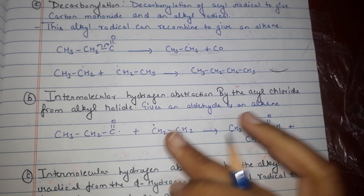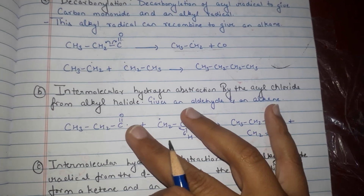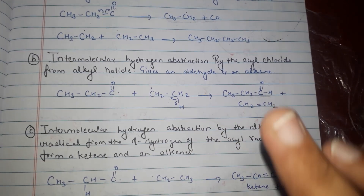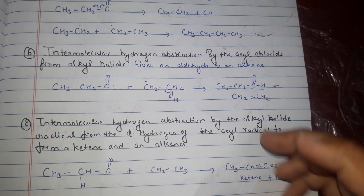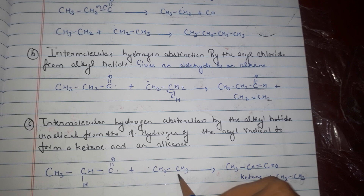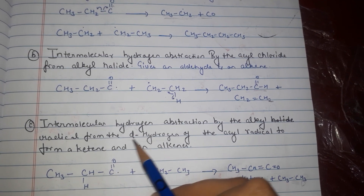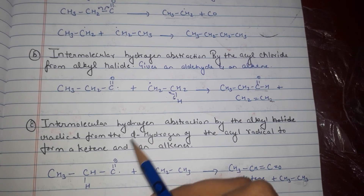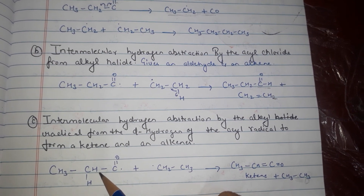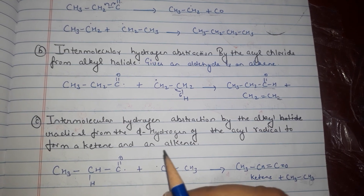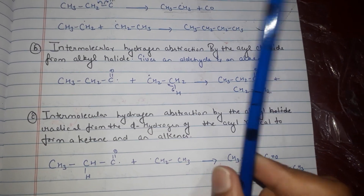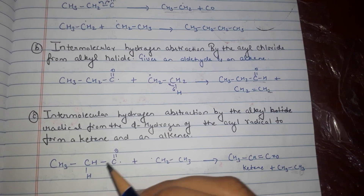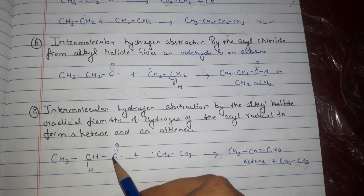The third step is intermolecular hydrogen abstraction by the alkyl radical CF₂CF₃ from the alpha hydrogen of the acyl radical, resulting in the formation of a ketene and an alkyne.